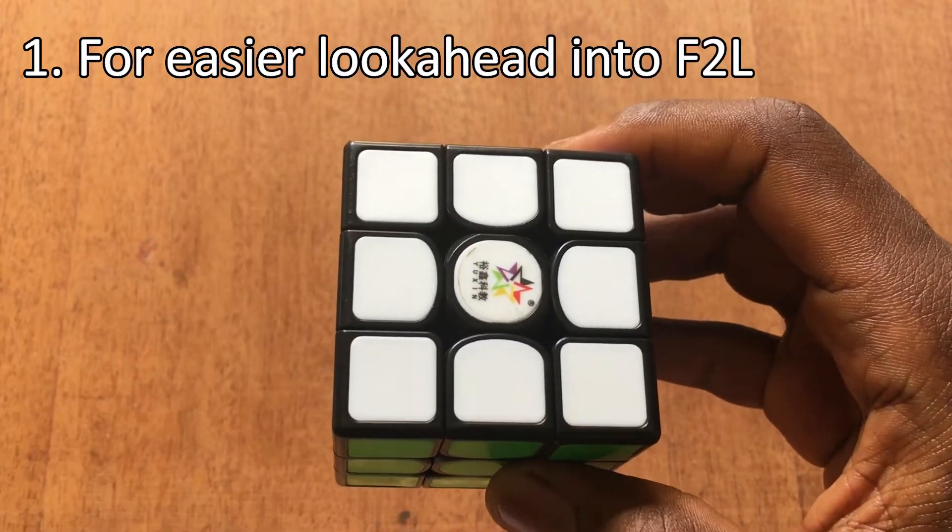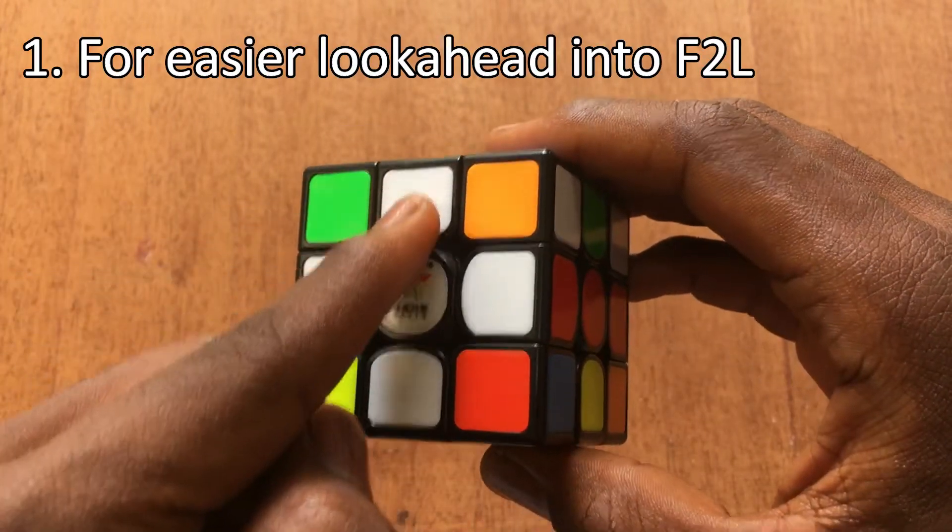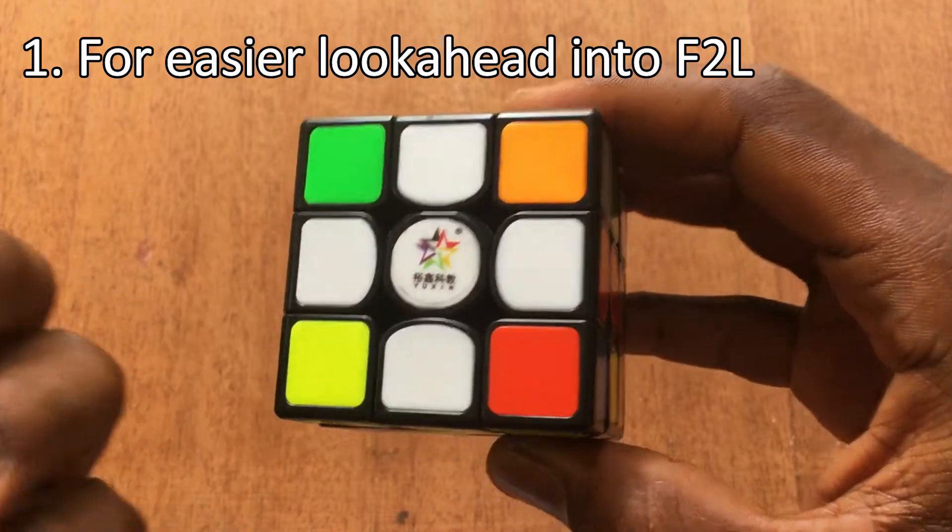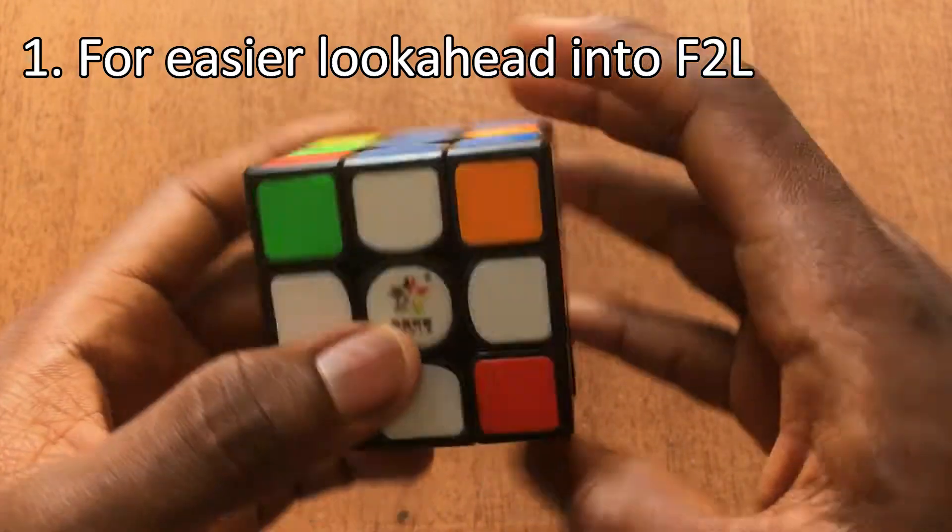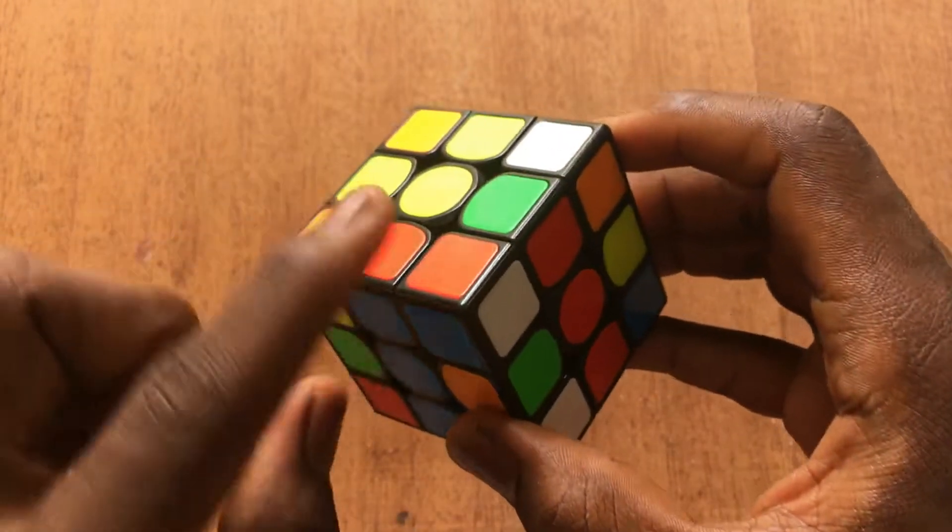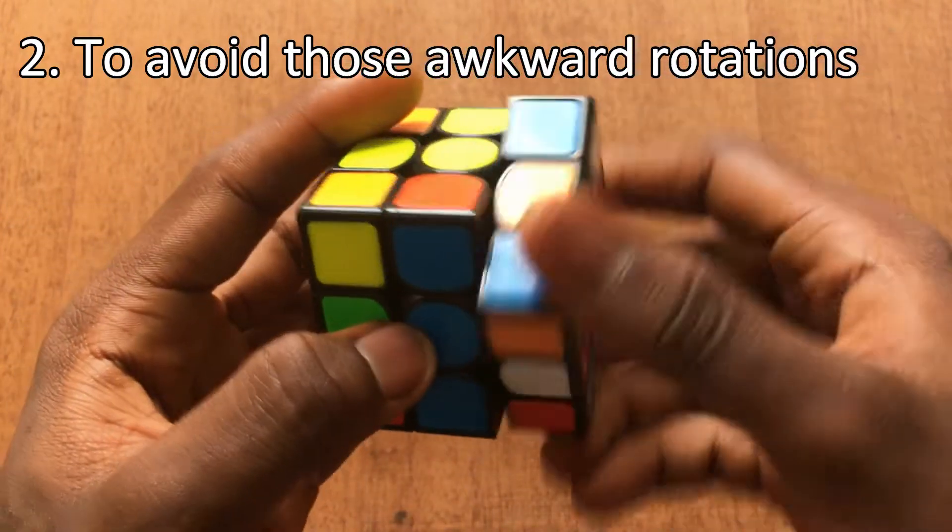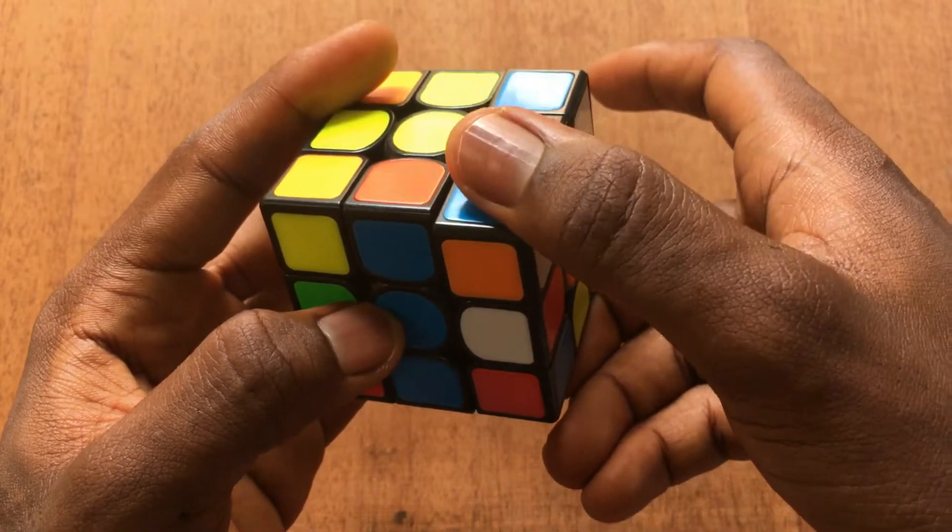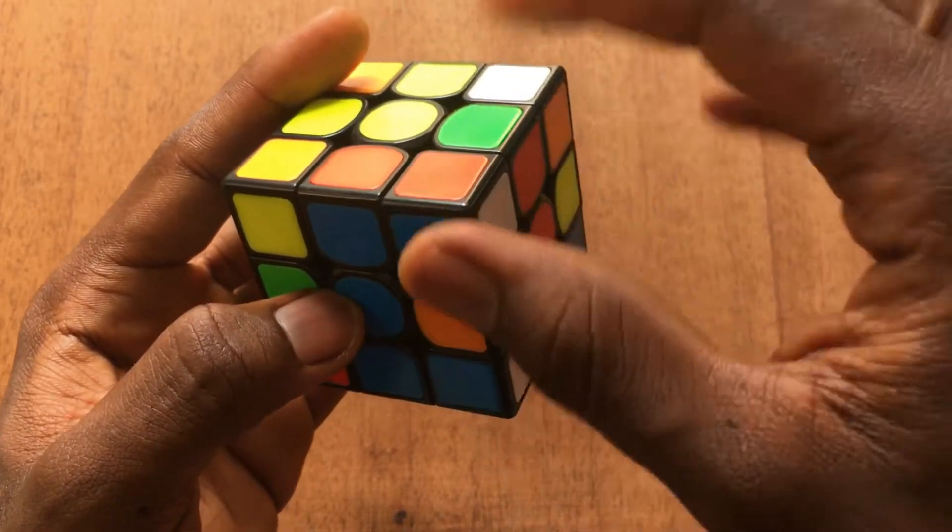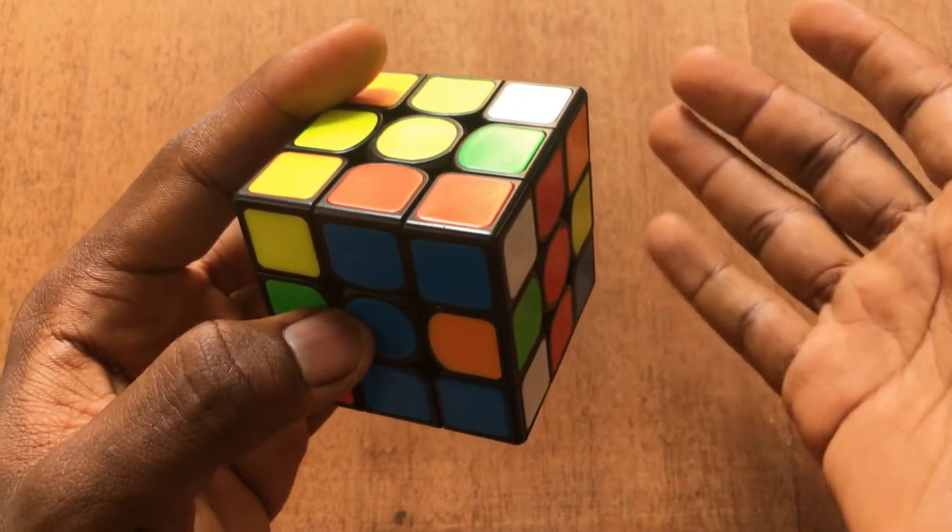The first reason is for easier look ahead into your F2L. For example here, I had my cross solved like this and if I had done this cross on top, I would have to rotate like this before I see this F2L pair already formed here. However, if I had done this cross on the bottom, when I finish my last move, maybe an R prime like this, I'll see this pair forming and go into it right away.